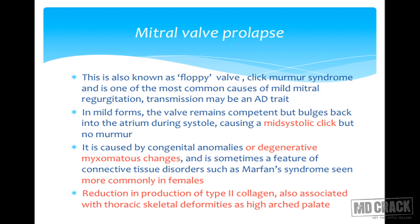In mitral valve prolapse, when the left ventricle contracts, the valve initially just bulges into the cavity of the left atrium — there is no regurgitation at first, so you get a click. When this click becomes sustained or in later phases, regurgitation develops, causing a systolic murmur — hence the term click murmur syndrome. In milder forms, the valve remains competent but bulges back into the atrium during systole, causing a mid-systolic click but no murmur.